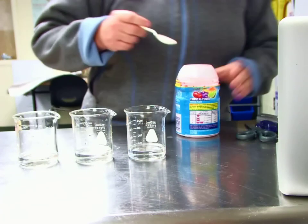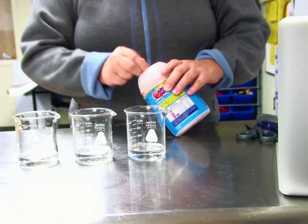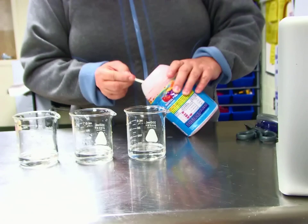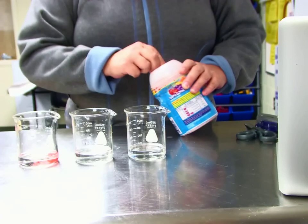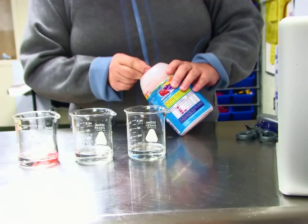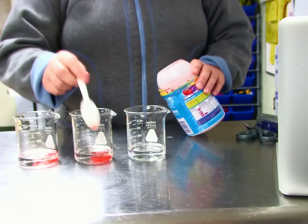And I'm going to add some solute to them, but I'm going to add different amounts of solute. In the first solution, I'll add about a quarter of a teaspoon of solute. In the next one, about half a teaspoon.